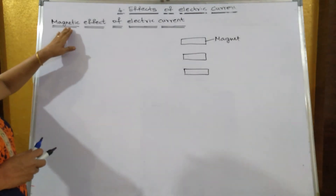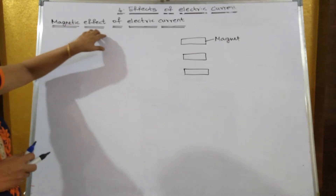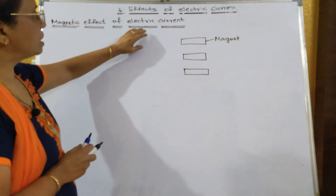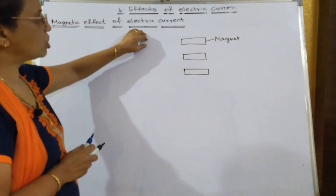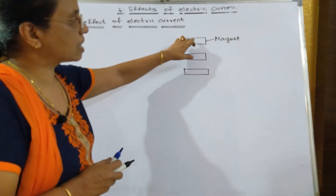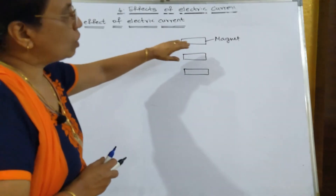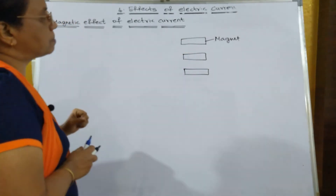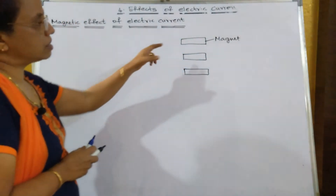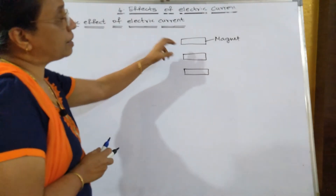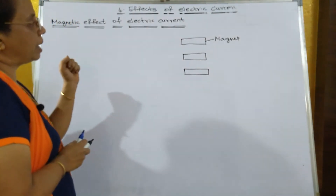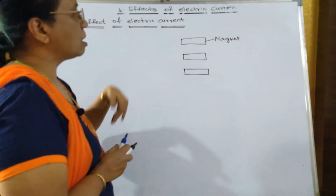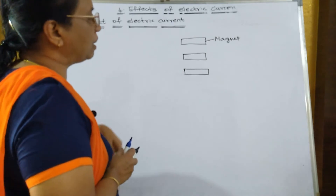Our next topic is the magnetic effect of electric current. But before we discuss this topic, let us discuss about the magnet. So what is a magnet? A magnet is something which can attract an iron object, and a magnet also produces a magnetic field.